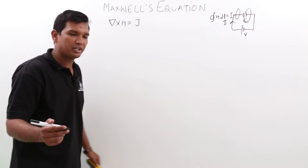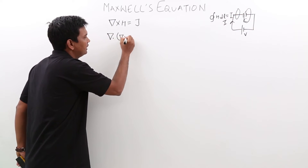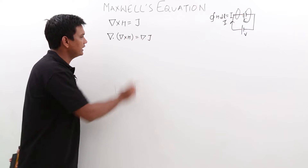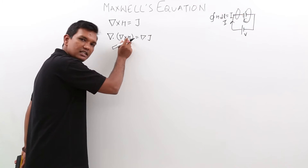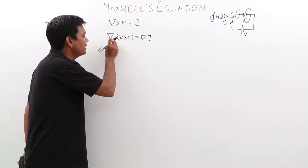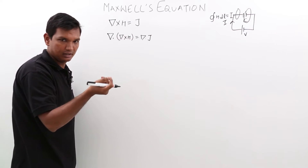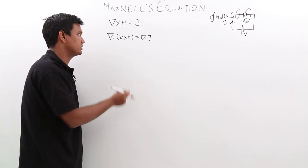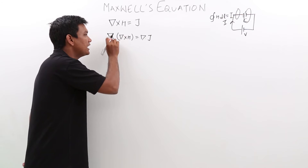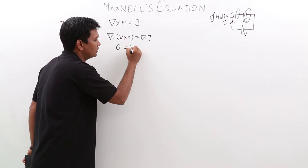Now let us try to take del dot del cross H and understand this equation. Del cross H is the curl, and del dot of this is the divergence of curl. We know that del cross anything is the curl, and del dot anything is the divergence. So we are trying to find the divergence of a curl, and the divergence of a curl will always be equal to zero.